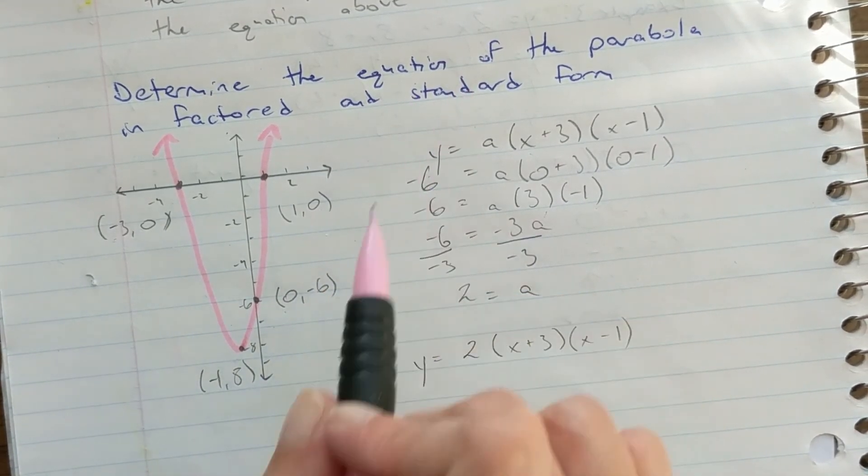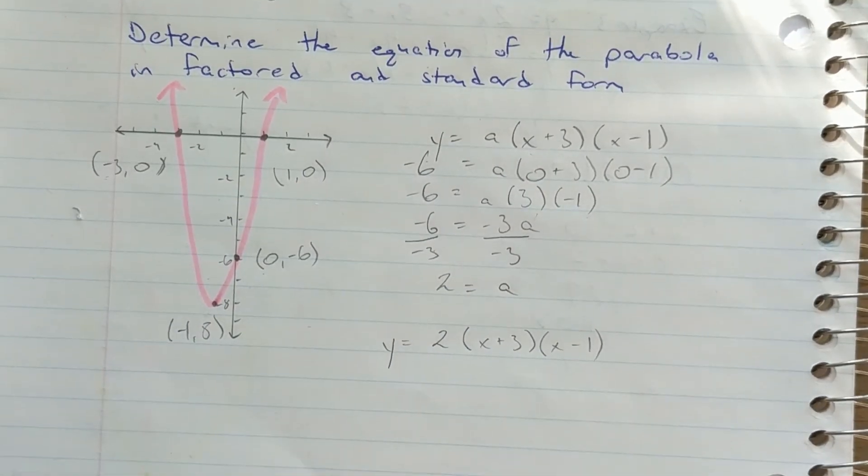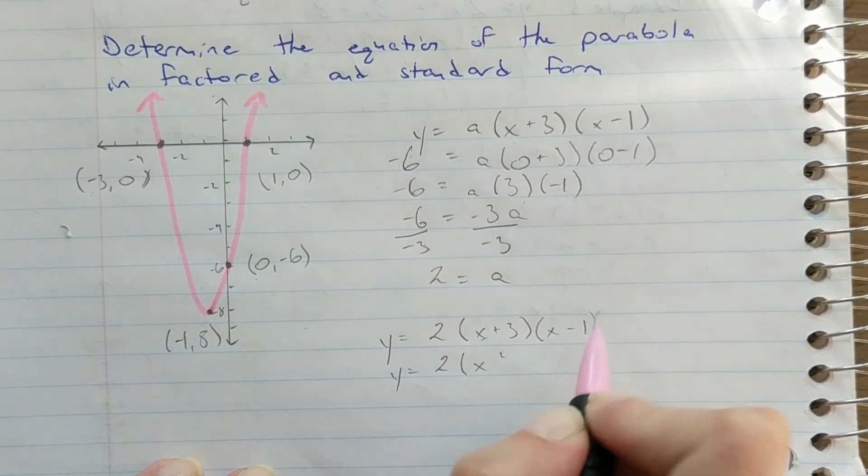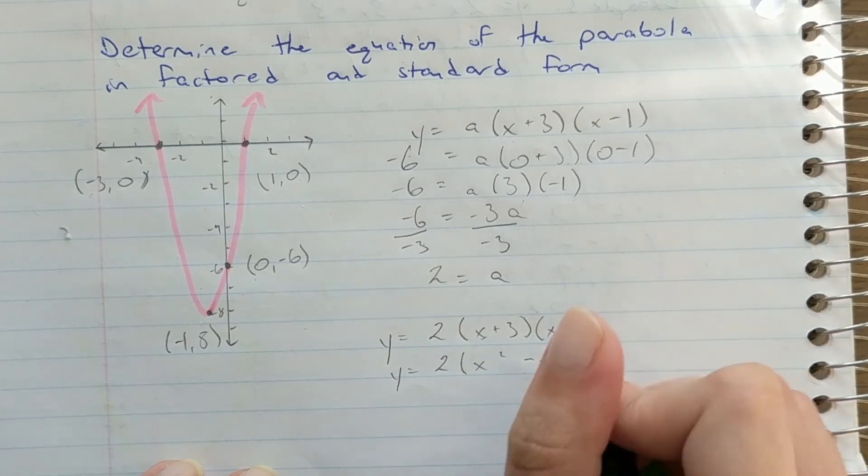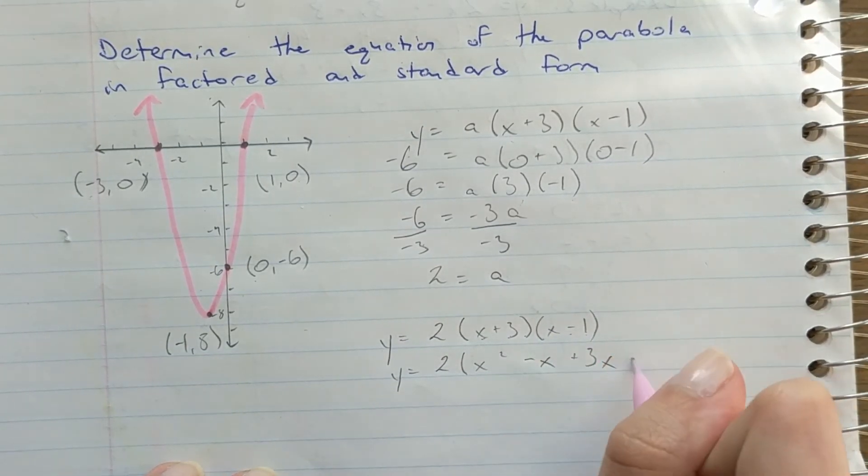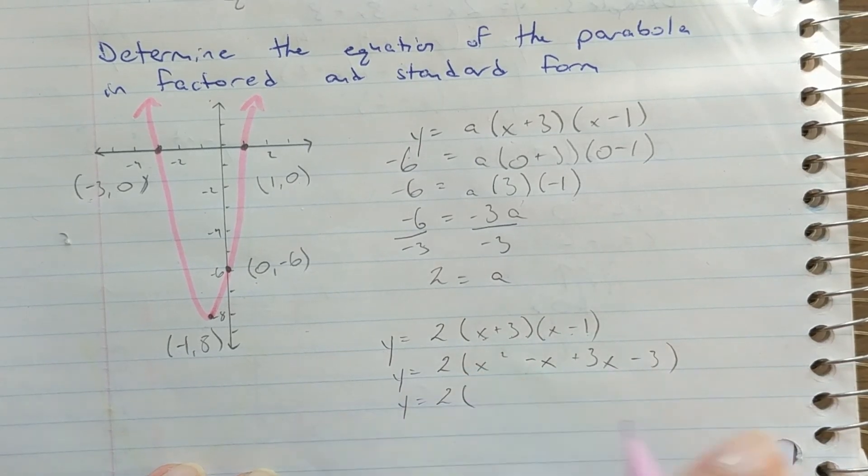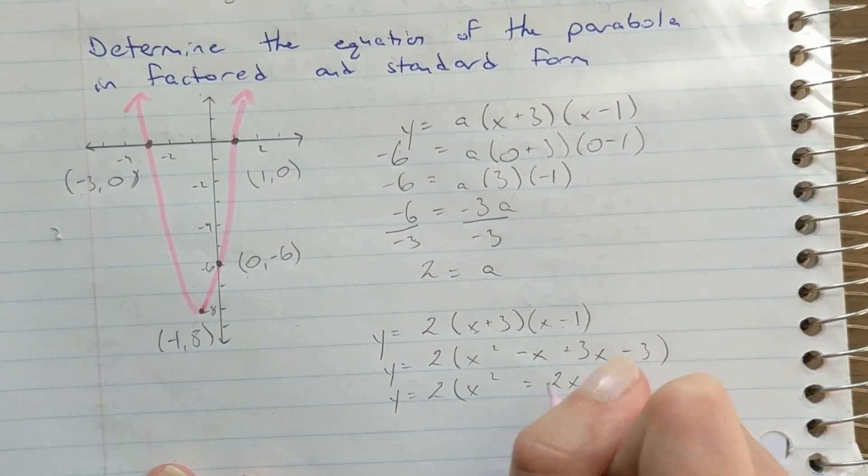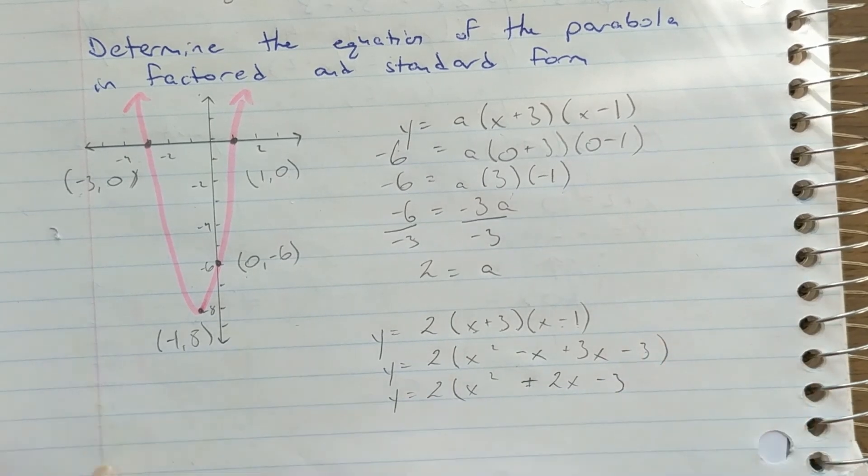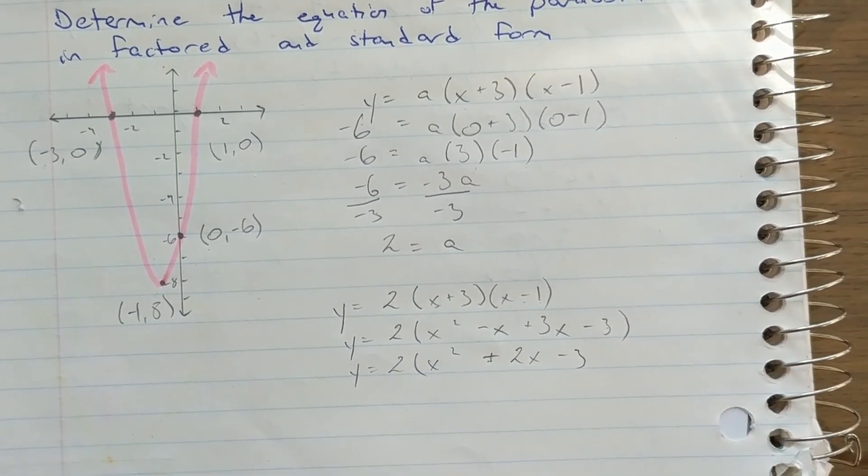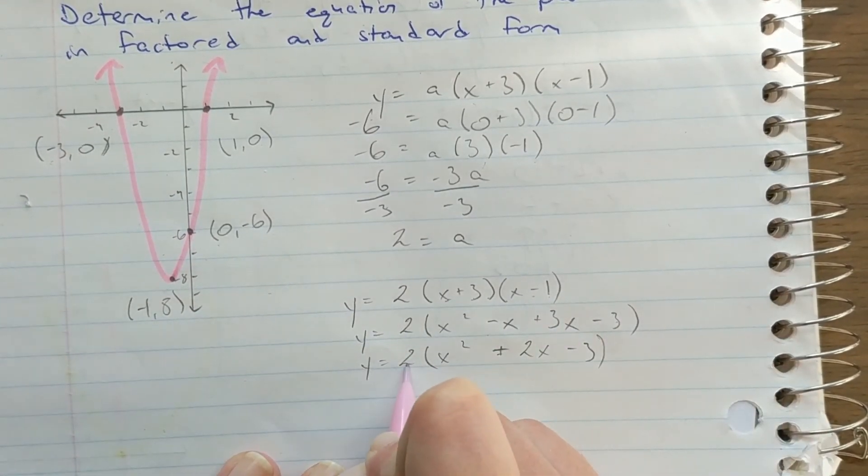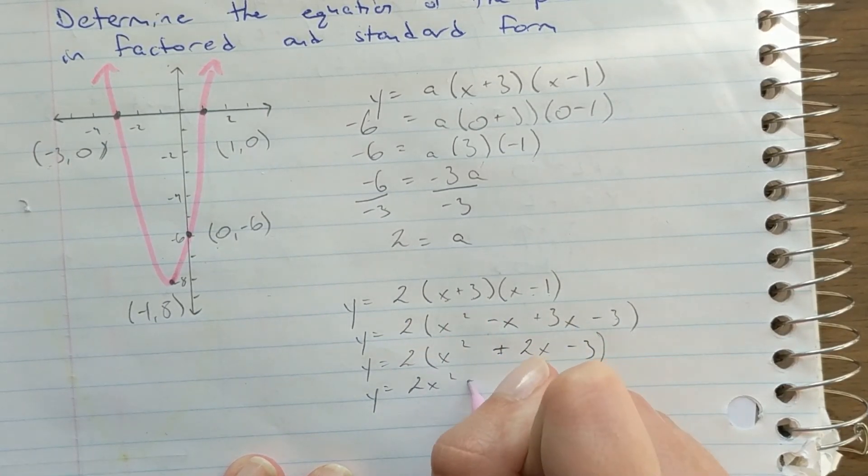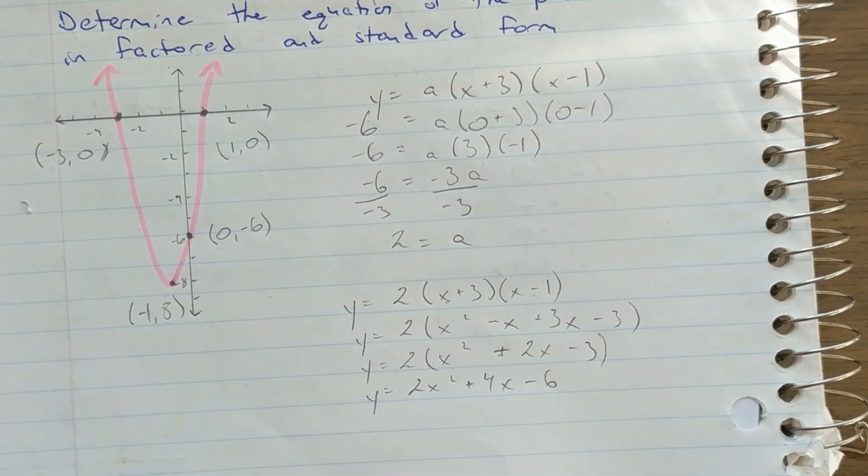I was also asked to find the standard form of my equation. So I'm going to do that by expanding. x times x is x squared, x times negative 1 is negative x, 3 times x is 3x, 3 times negative 1 is negative 3. I'm going to simplify what's inside my brackets here, leaving me with 2x squared plus 2x minus 3. And finally, I can use the distributive property to remove my brackets altogether, giving me y equals 2x squared plus 4x minus 6 as my final equation.